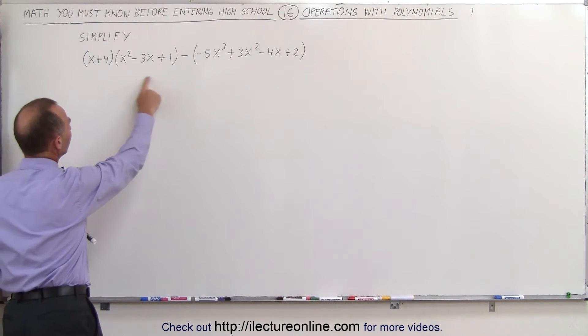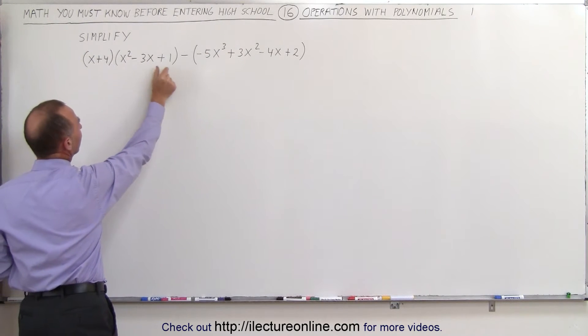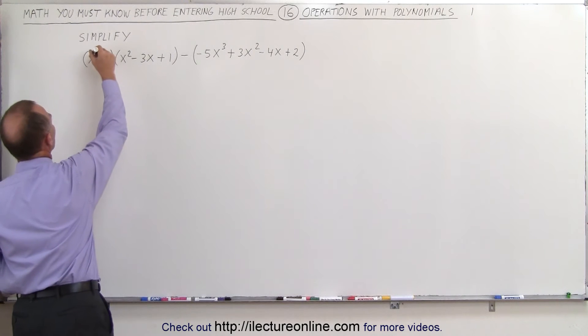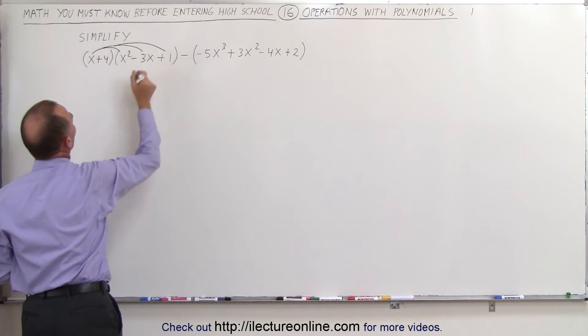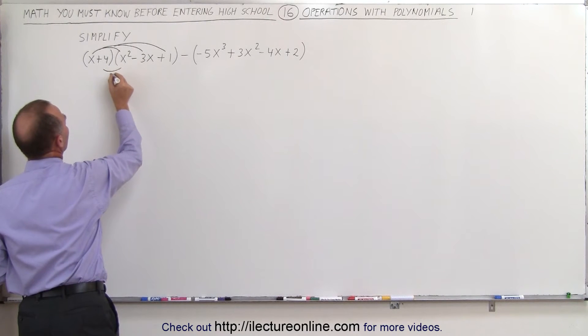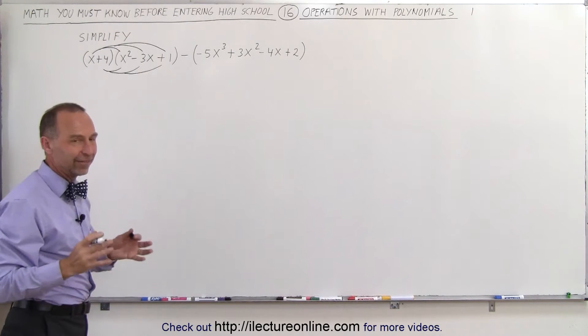So let's multiply this out and see what we get. That means we multiply each term in the first polynomial with each term in the second polynomial. In other words, we're going to multiply the x times the x squared times the 3x and times the 1, and then we take the number 4, multiply it times the x squared, the minus 3x, and the plus 1.